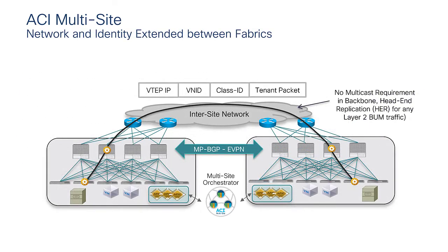The reason we need second generation hardware in the spine is because of an ingress replication function used when sending layer 2 flooded traffic across sites, and more importantly to support the namespace normalization functionality.